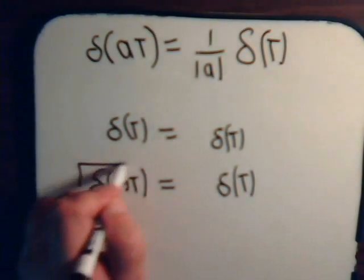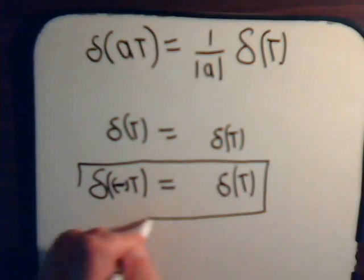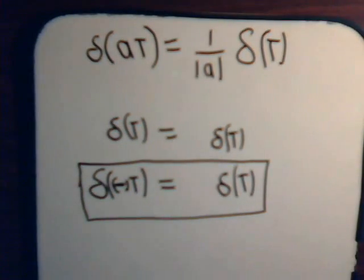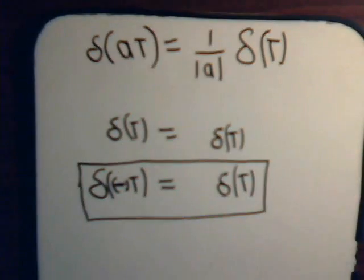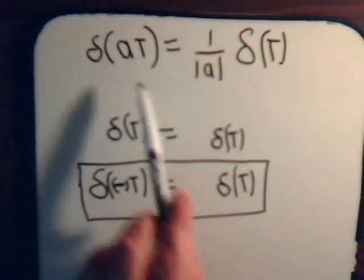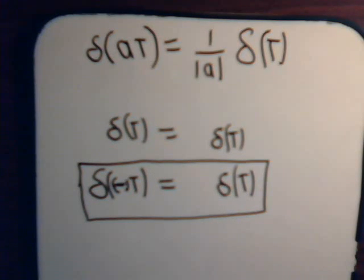Showing then that, in fact, the Dirac Delta function is an even function. So that consequence just falls out from the scaling property of the Dirac Delta function which we proved in the previous video.